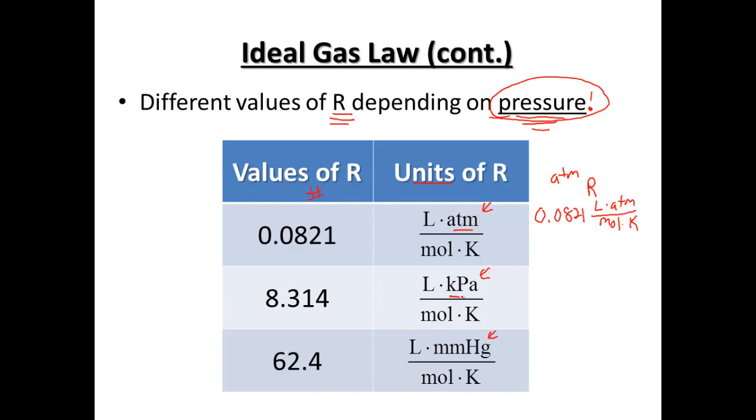If we use kilopascals, we're going to want to use this number. And if we're in millimeters of mercury for pressure, we're going to use this number. Remember, these 3 are all in your gold packet. The key part is remembering which pressure decides which unit you're going to use and number you're going to use.